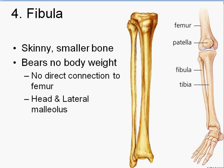Next up is the fibula — the smaller bone on the outside that does not bear any of the body's weight. There's no direct connection to the femur in humans. The head is up here, which articulates with the tibia. Down here is the lateral malleolus. If you feel the outside of your ankle there's a bump that sticks out — that's what you're feeling. Parts down here will articulate with the ankle bones.